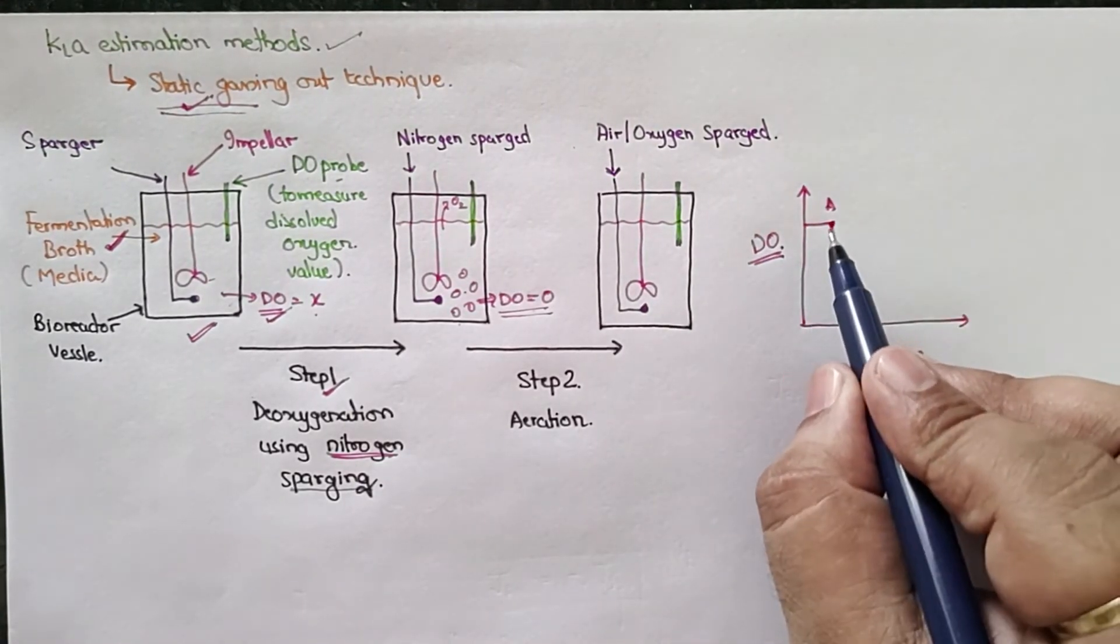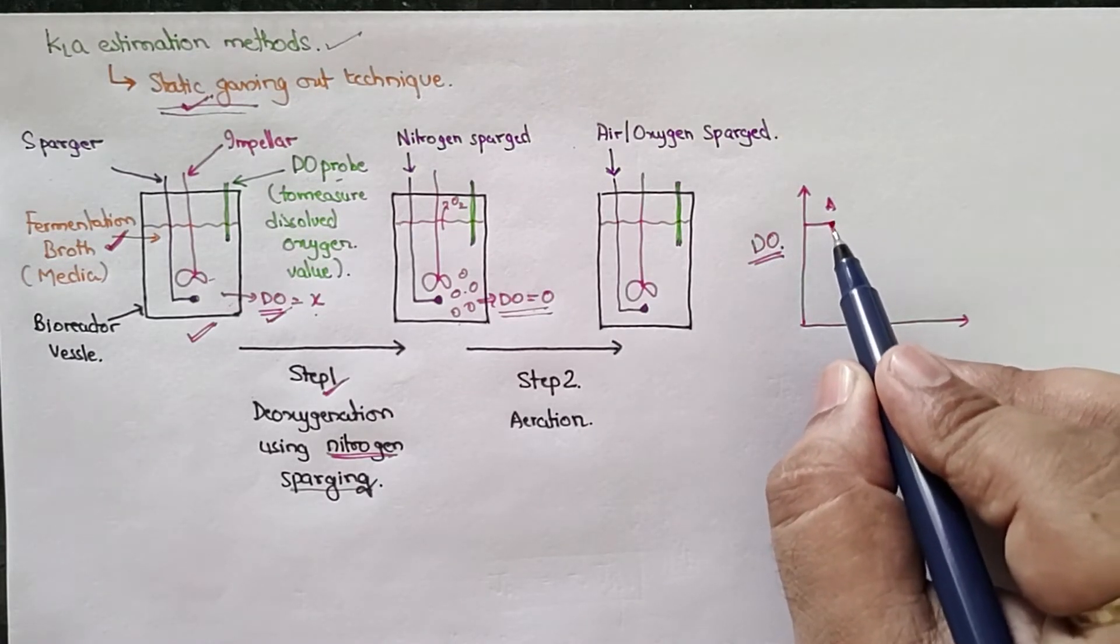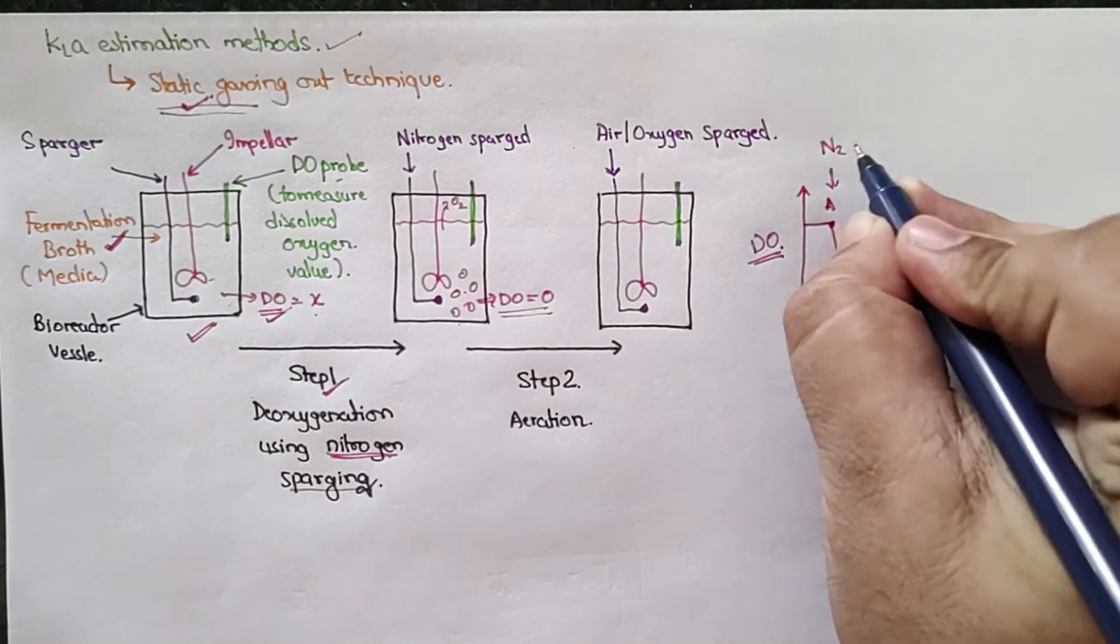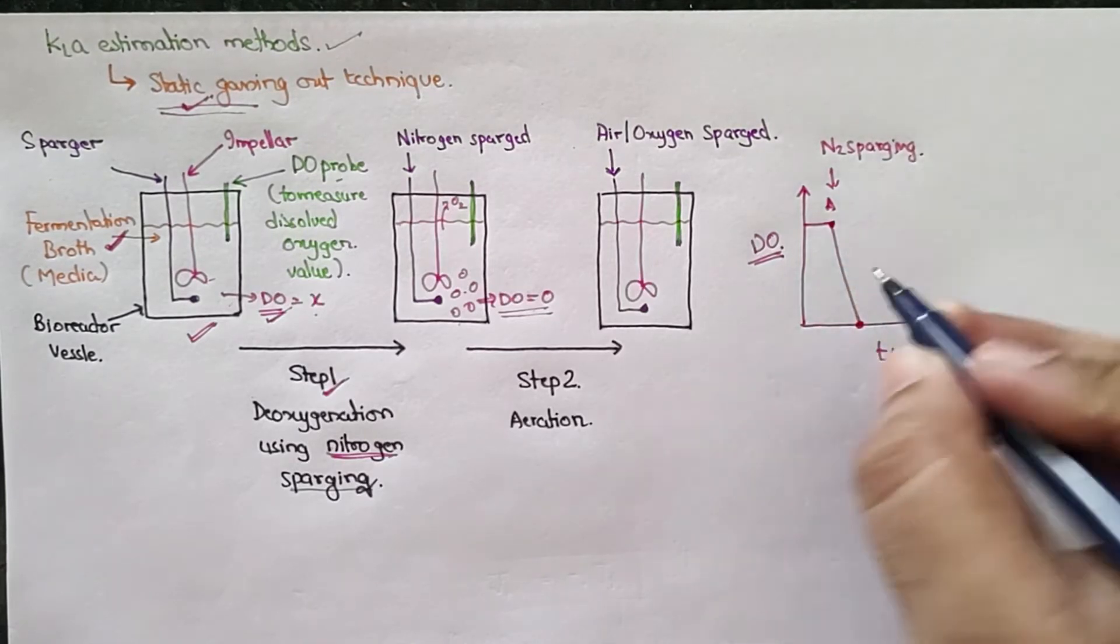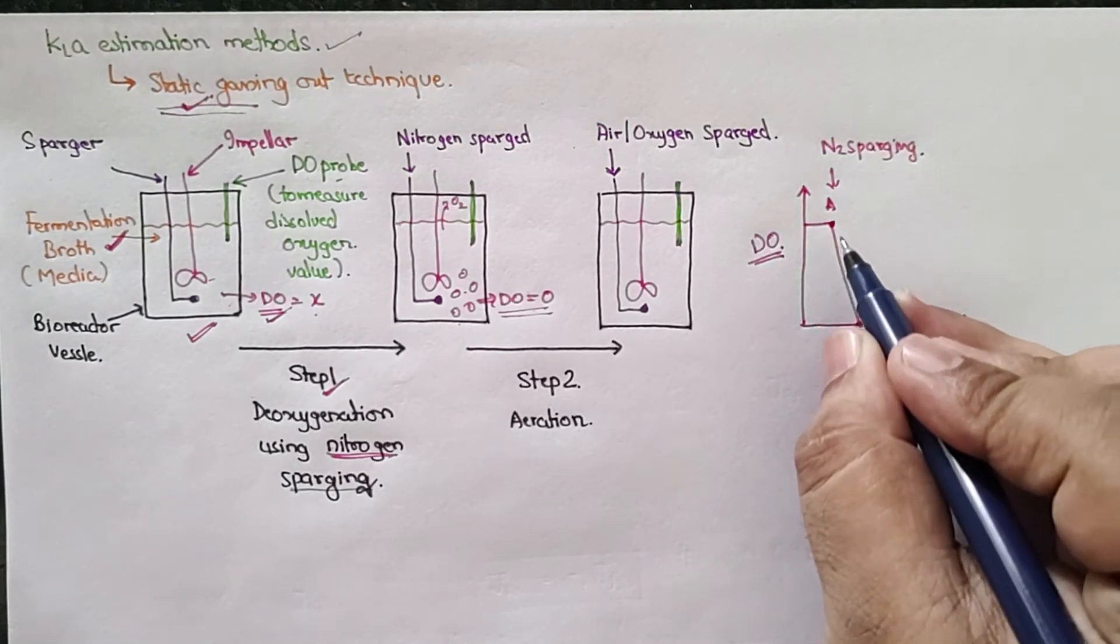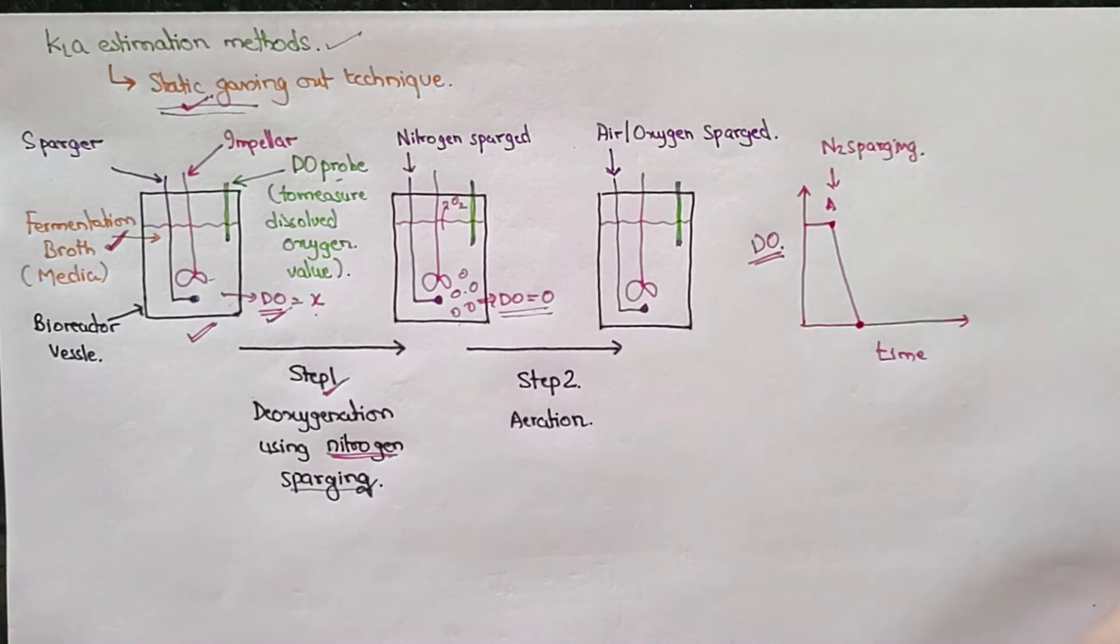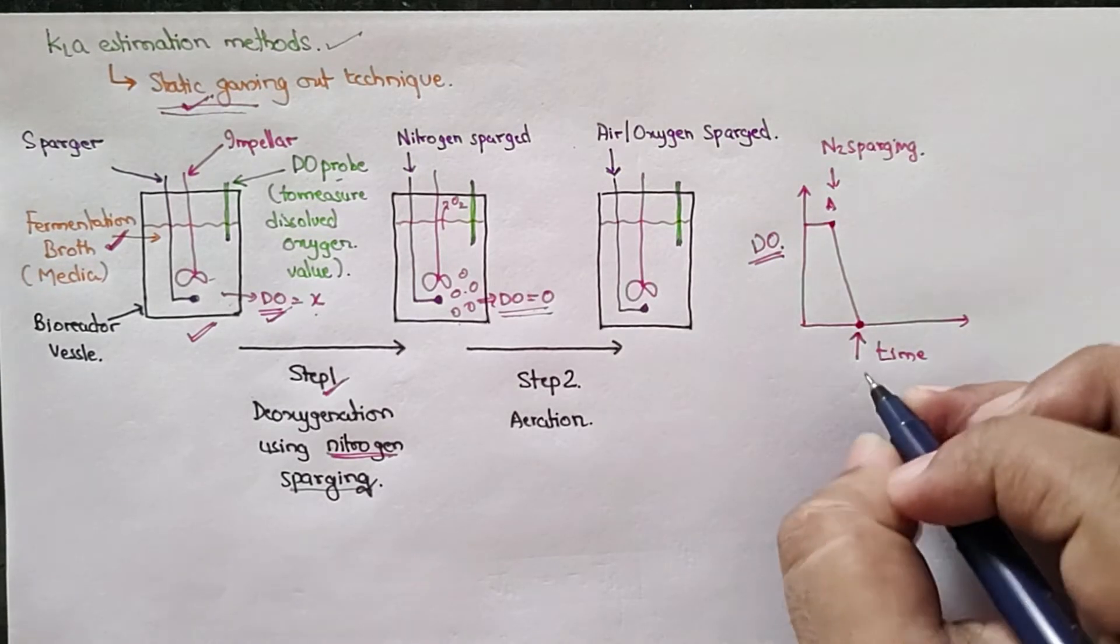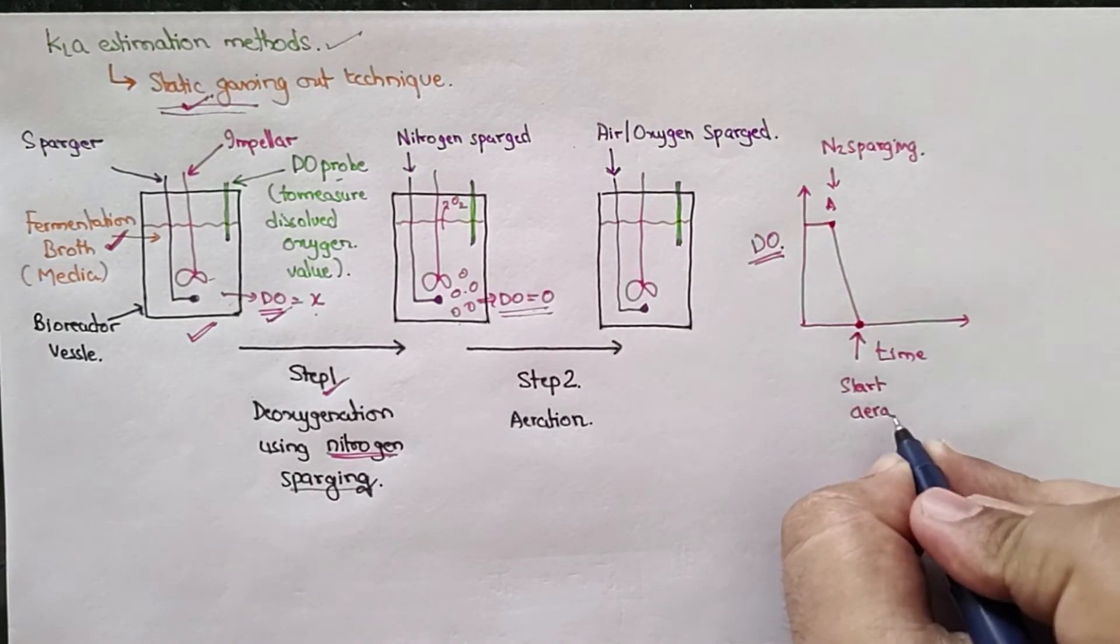So this is step A, when you start passing or sparging the nitrogen into the system. This nitrogen sparging will cause removal of oxygen or deoxygenation of the media, so the DO value will drop down to zero. At this point, you will start aeration again.